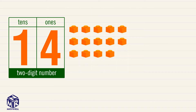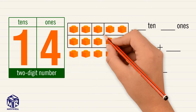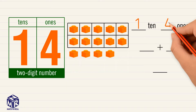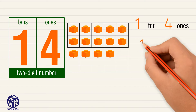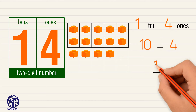Let's write 14 in three different ways. Take a look at the model. We can group 10 ones to make a 10. So we can write 14 as 1 ten and 4 ones. We can also write 14 as 10 plus 4, or 14.